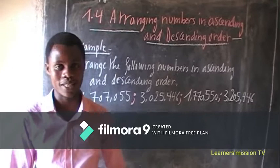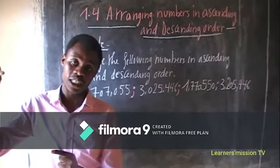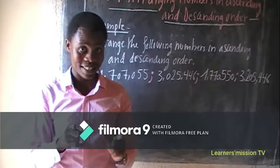What is ascending order and what is descending order? Number one: ascending order is a way of arranging numbers from the smallest to the greatest. While descending order is a way of arranging numbers from the highest to the smallest.